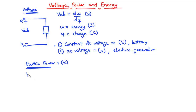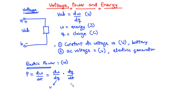We can express electric power mathematically as P equals dW/dT. According to the chain rule, we can express P equals dW/dT as dW/dQ times dQ/dT. Now, dW/dQ is the work done or the energy needed to move a unit charge through an element, and that is the voltage V. And dQ/dT represents the time rate of change of charge, and that is I, which is the current. Therefore, the power absorbed or supplied by an element is given by the product of the voltage across it and the current flowing through it: P equals VI.